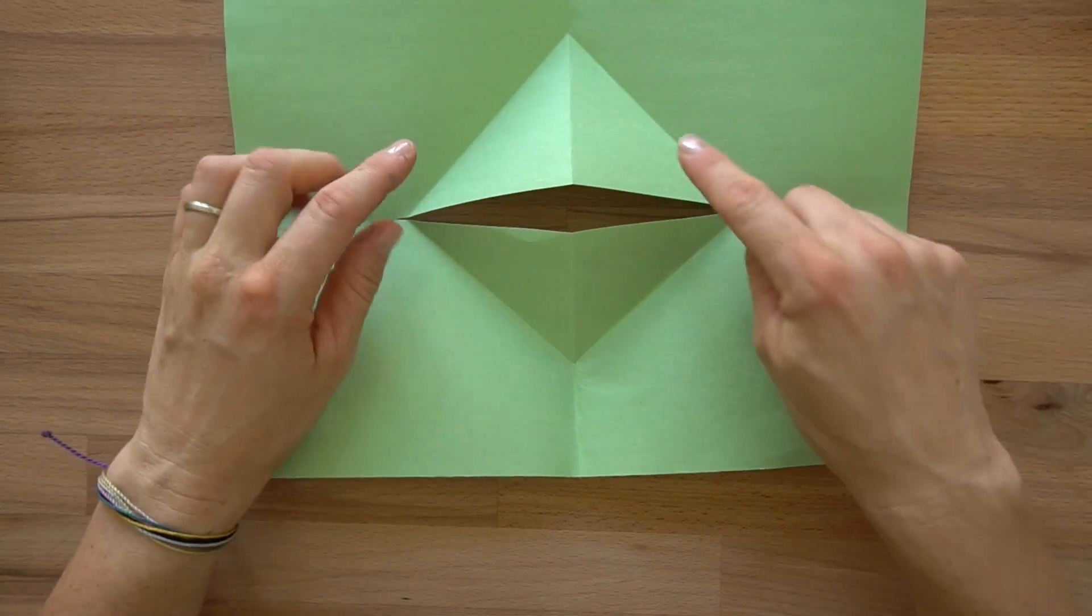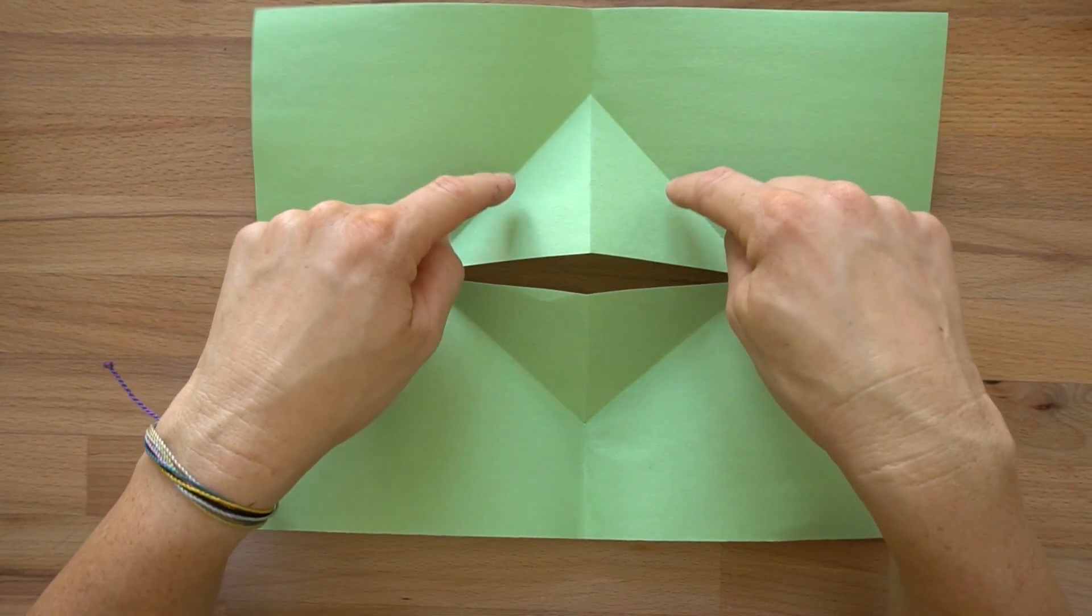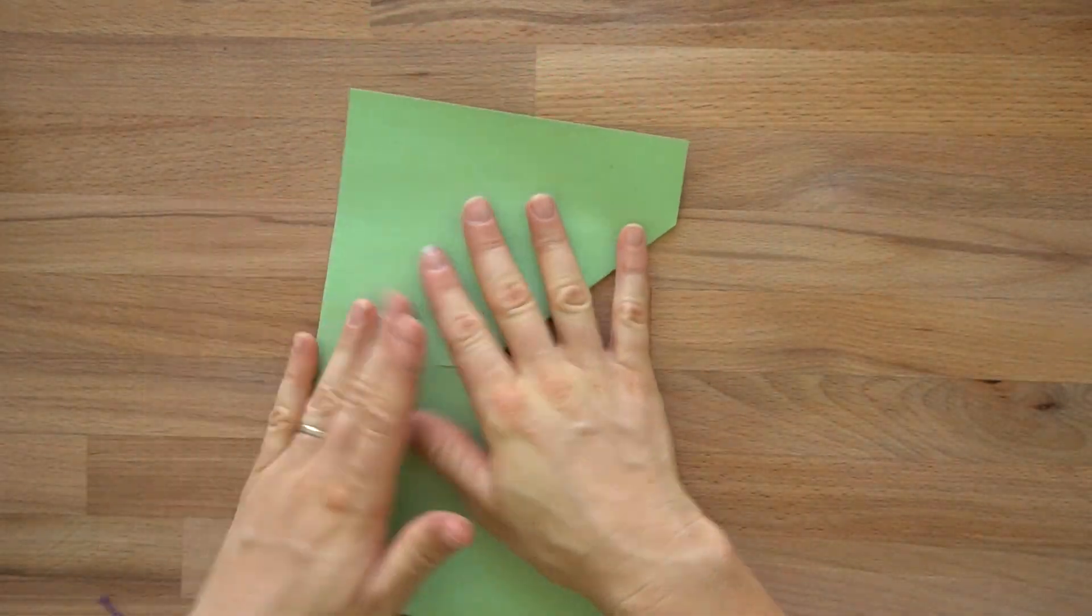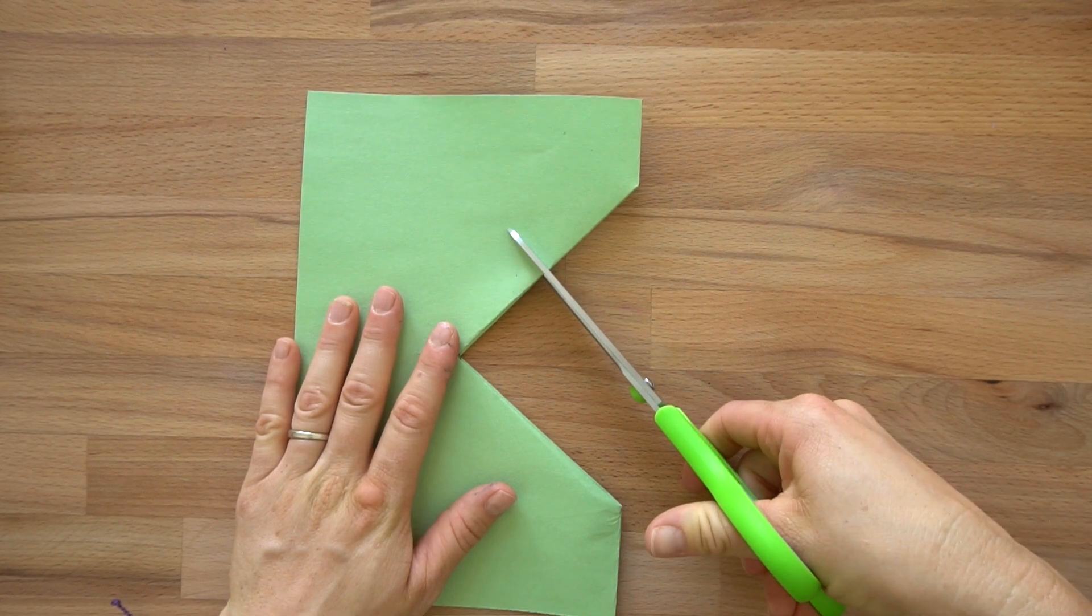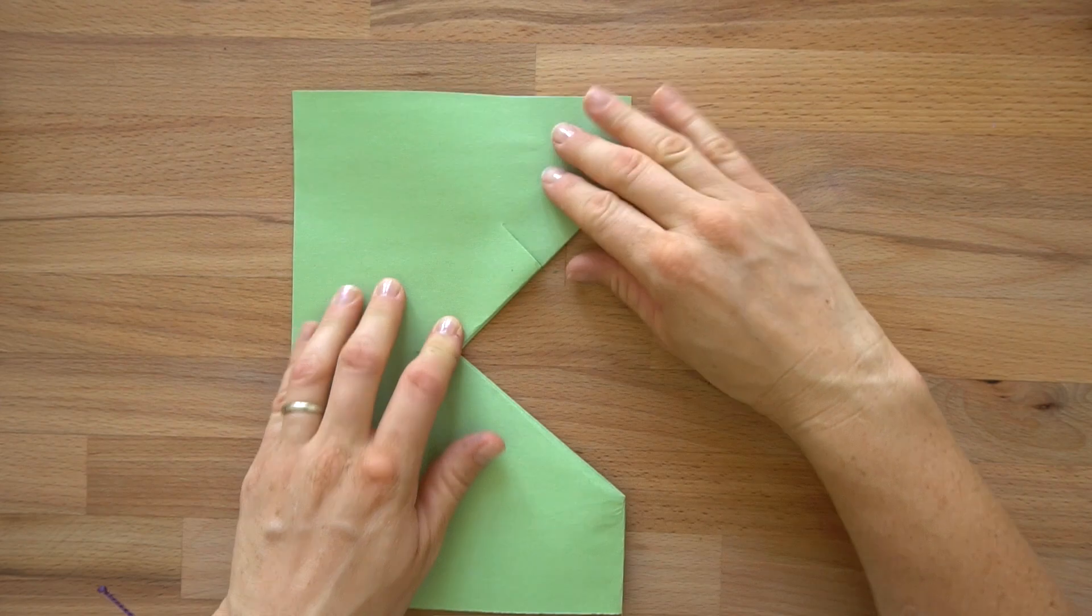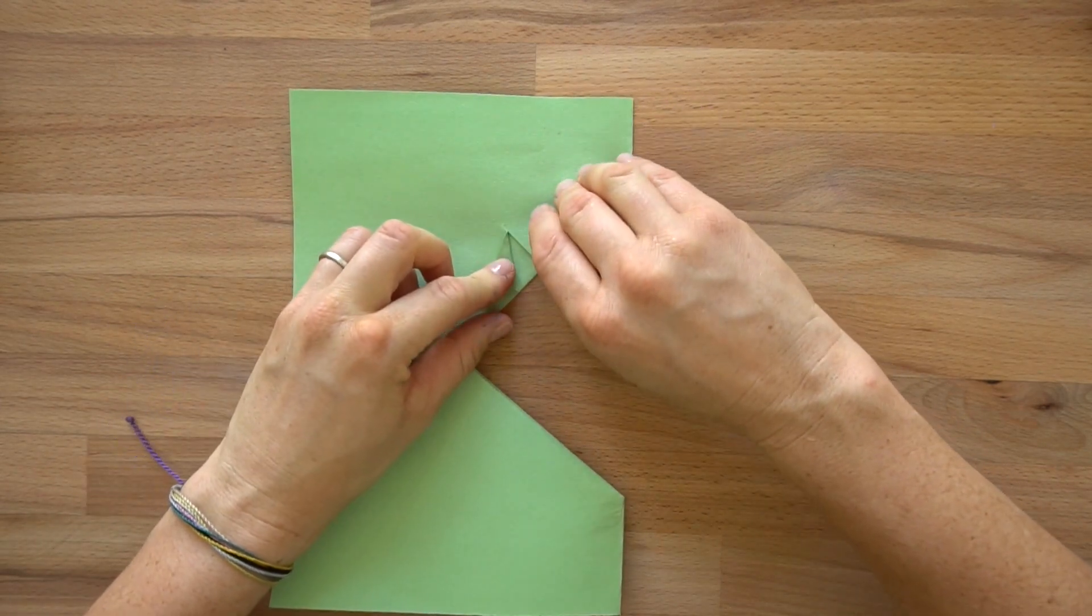And now what we're going to do is create some eyes right here. And we're going to do the same technique we just did, use the same technique. So close it, take your scissors, cut a little piece right there, so you have like a little line. Then we're going to fold these and make these into two triangles.